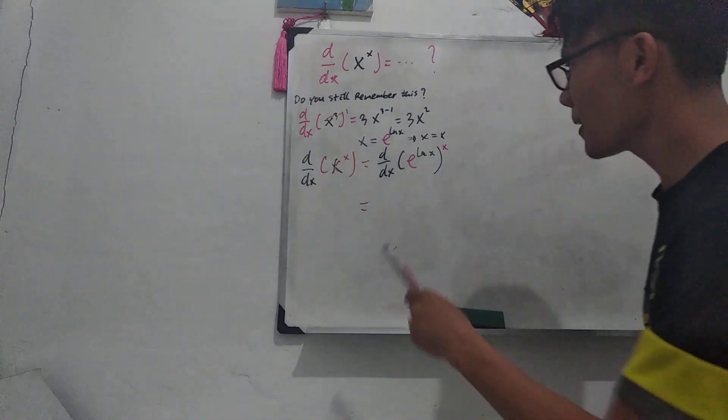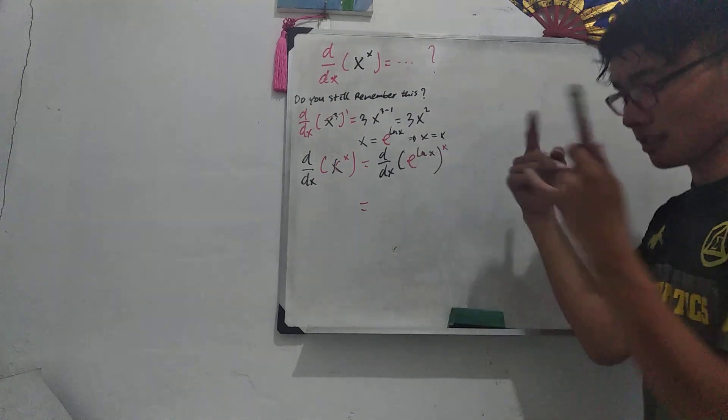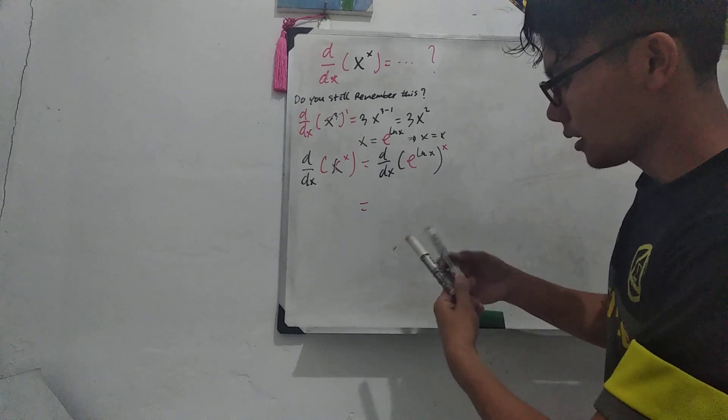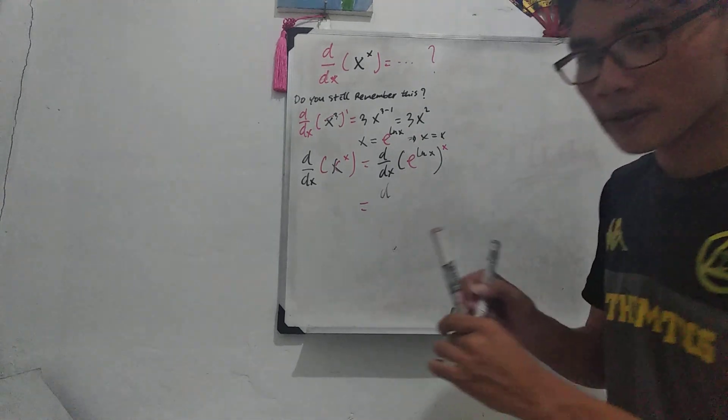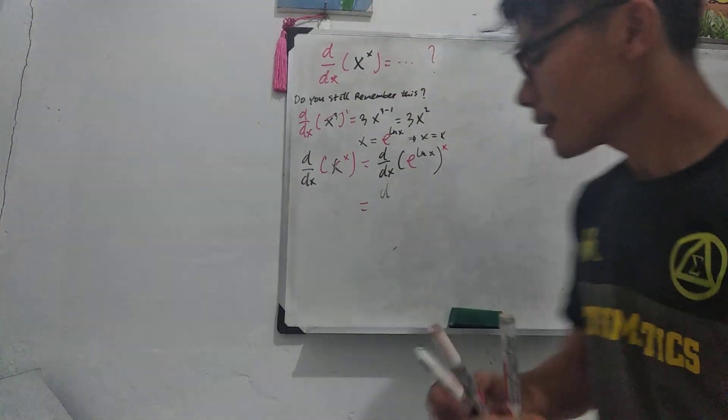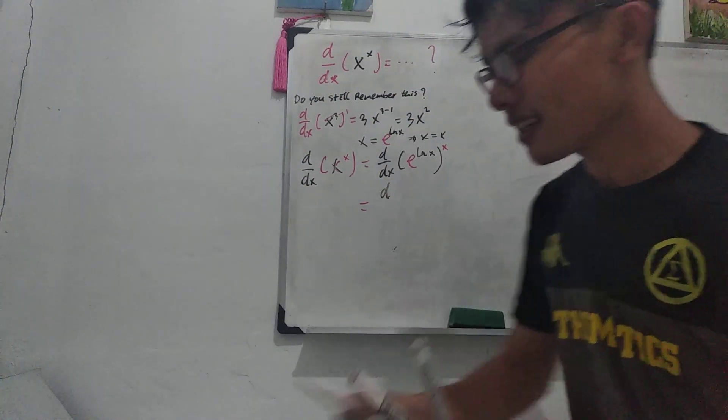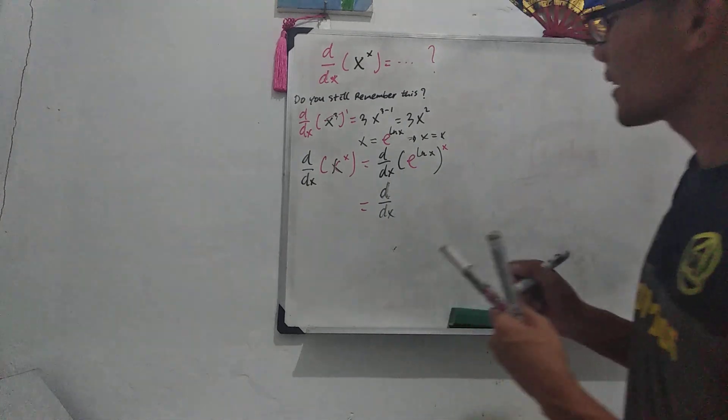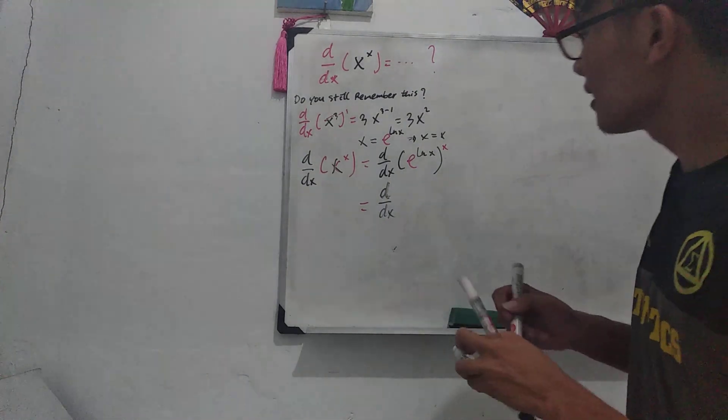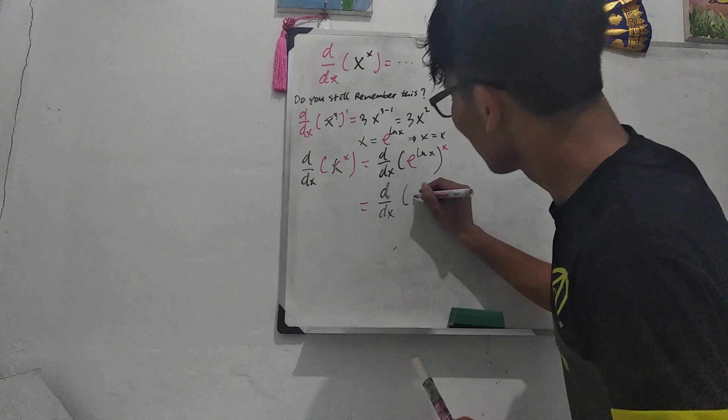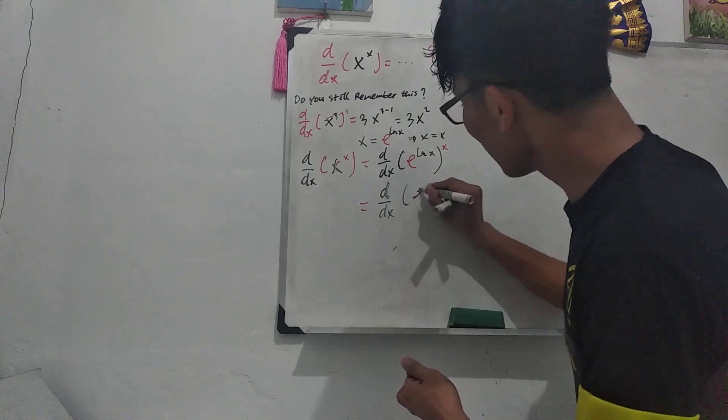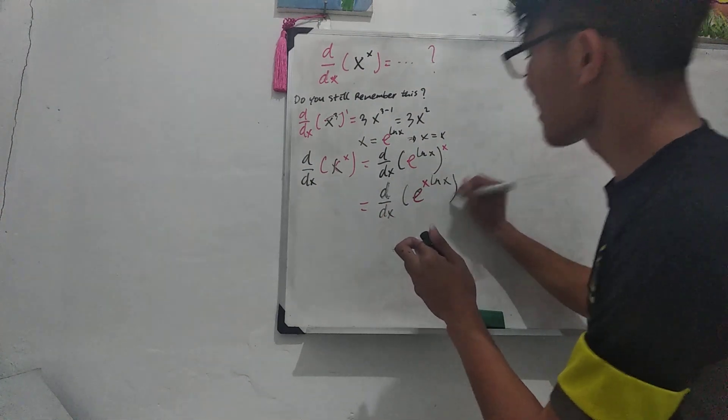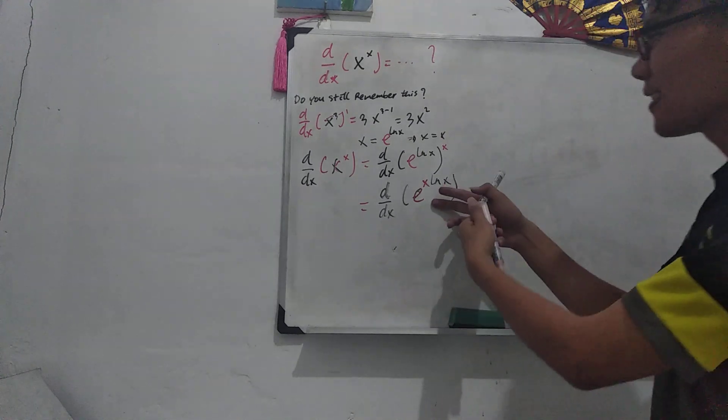So what we need to do is we'll just multiply this x according to exponential properties. So we'll just do like this. It's gonna be d/dx, okay? It's gonna be this one, e to the power of x ln x. That's the result of this, okay?